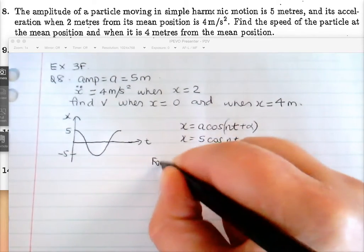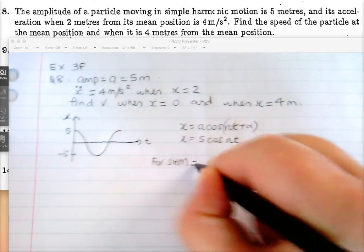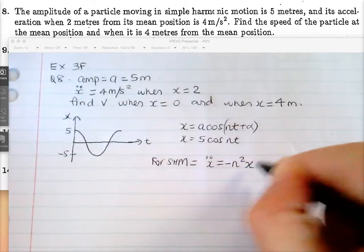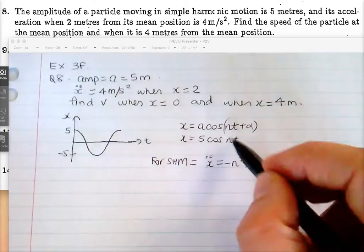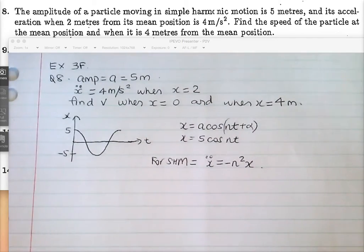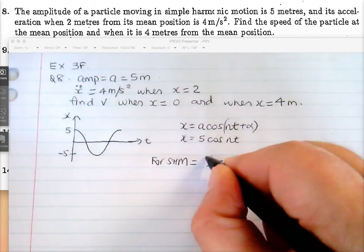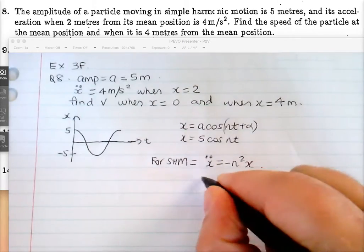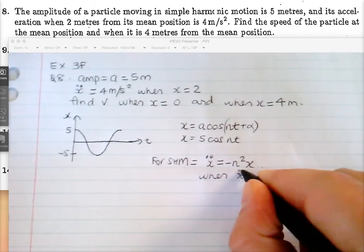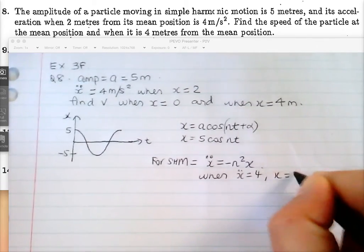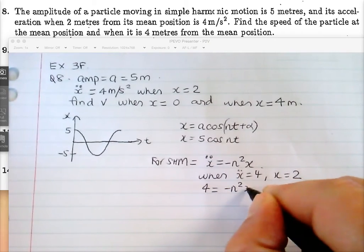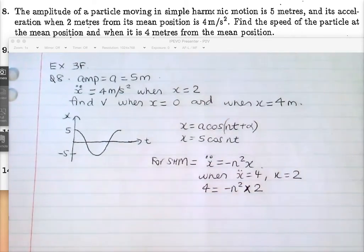So what do you know for simple harmonic motion? That acceleration is negative n squared x. Now I don't know what the period of motion is. But when acceleration is 4, x is 2. So therefore, 4 equals negative n squared times 2.